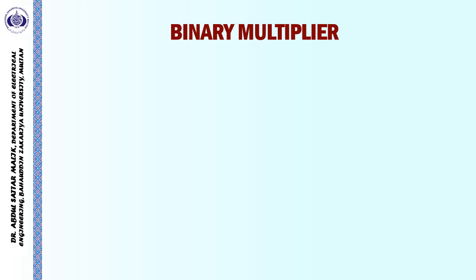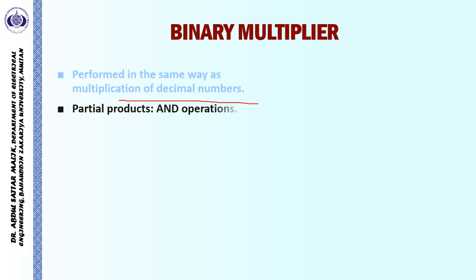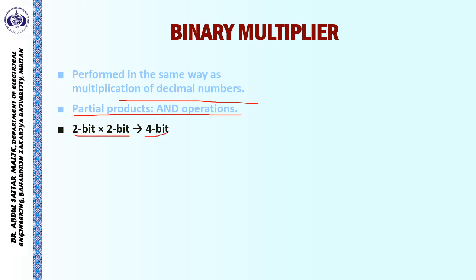In this slide, we will first see the concept of multiplication of two numbers and then extend our algorithm. Multiplication is performed in the same way as multiplication of decimal numbers. We initially determine the partial products through AND operations. For example, in the case of two 2-bit numbers, the result of multiplication will consist of four bits.